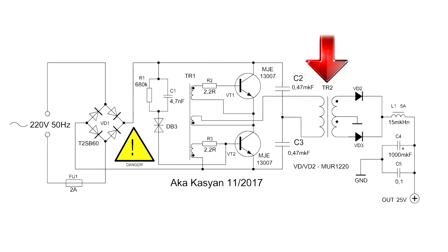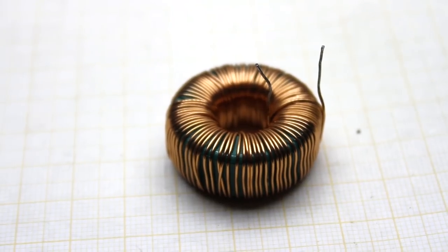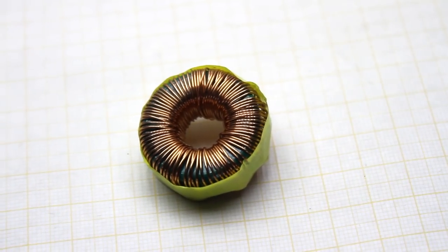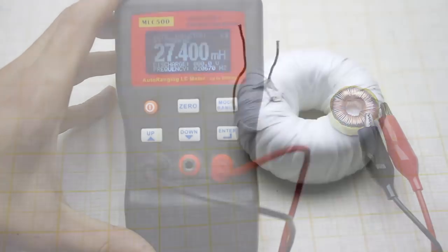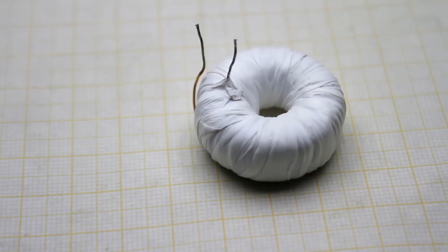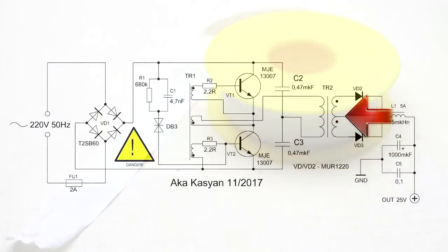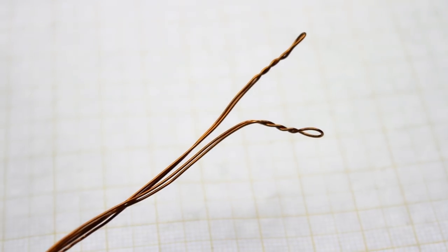The pulse transformer is annular, brand N87 from EPOX. The dimensions are now in front of you. The primary winding consists of 90 turns of 0.5 mm wire and with inductance of about 28 mH. The primary winding must be isolated. In my case, the insulation is a fluoroplastic tape. The secondary winding has two identical parts connected at the middle point. Each shoulder consists of 16 turns of double wire with a diameter of 0.5 mm.